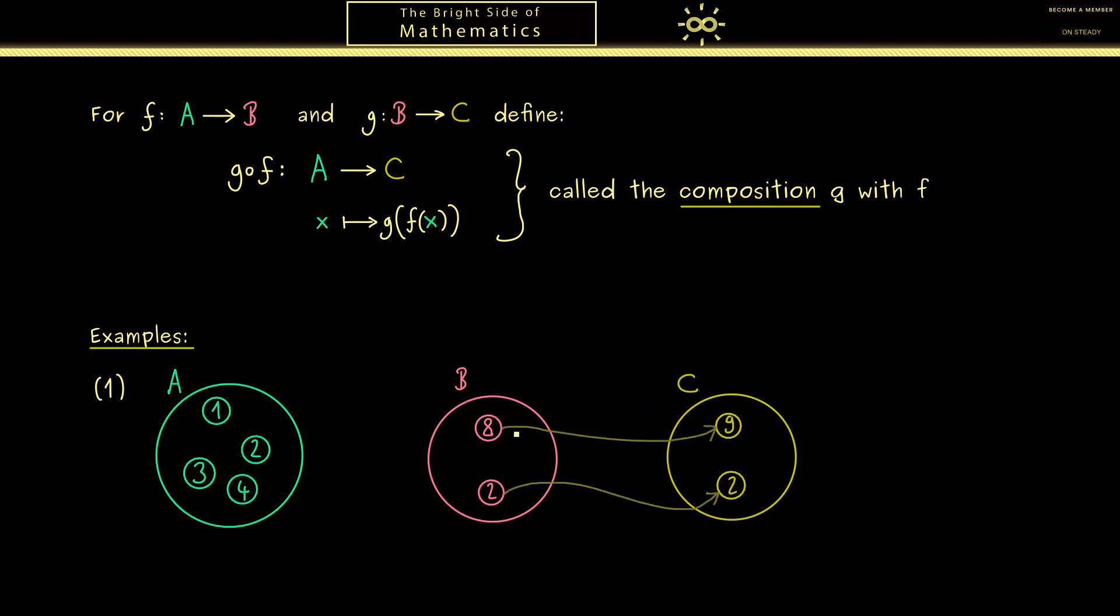Now the map G should be defined by sending 8 to 9 and 2 to 2. So with these two assignments G is completely defined. And the map F we want to define by sending any element just to 8.